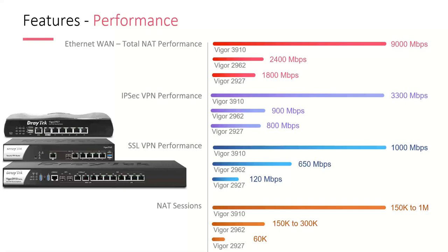On IPsec and SSL performance, there's increased demand on the HQ as remote sites get faster internet connections. The 3910 has the IPsec performance and SSL throughput to cater for giving more users a faster experience. On NAT sessions, it supports up to 1 million — it's configurable from 150K up to 1 million depending on how much memory you want to assign.